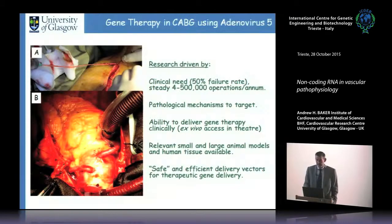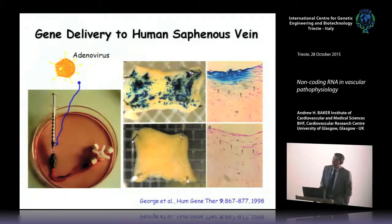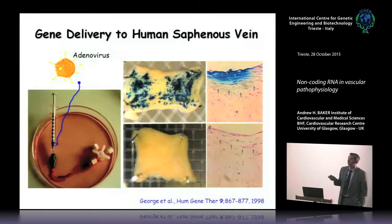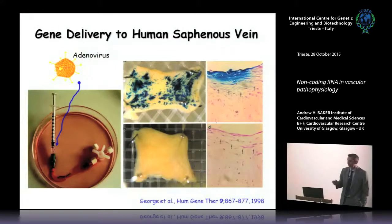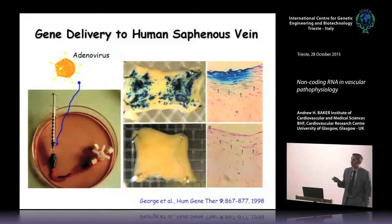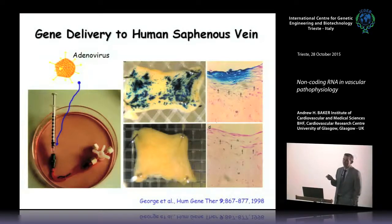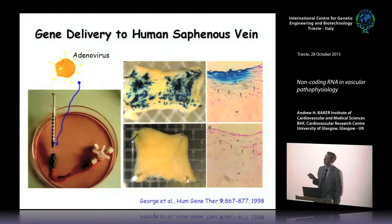We've mainly used pig as the pre-clinical model. With AAV you get essentially nothing in terms of efficient delivery — we've tried most serotypes. AAV would be better for longer-term gene delivery, and lentivirus works but we can never produce high enough titers. So we're left with adenovirus, the poor man of viral gene therapy, but it works very well here.